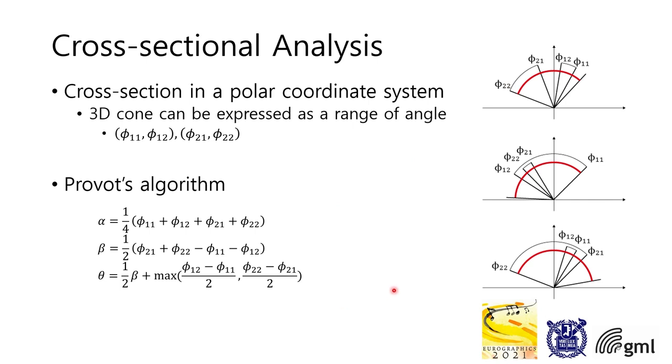See the right image. The red arc is the result from Provot's method. It can be clearly seen that the result from Provot's algorithm is unnecessarily large.